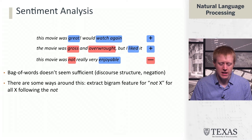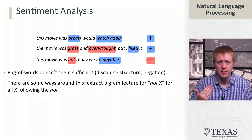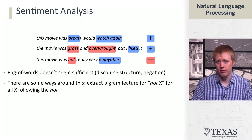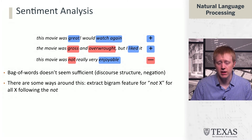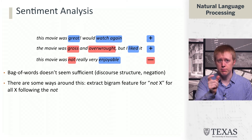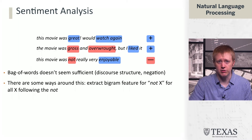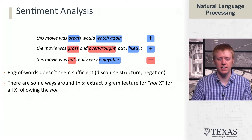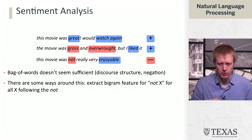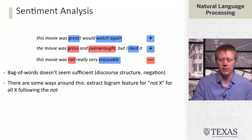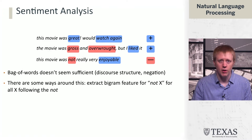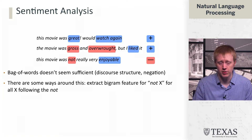Getting around this and actually operationalizing it to do better is a little bit tricky. In the world of bigram features, you could do things like when you see a 'not,' basically broadcast that 'not' to every word that follows it — extracting 'not really,' 'not very,' 'not enjoyable.' Though without some kind of syntactic analysis like a parser, you're going to have a hard time doing this totally reliably.